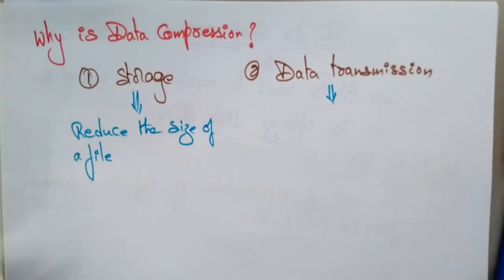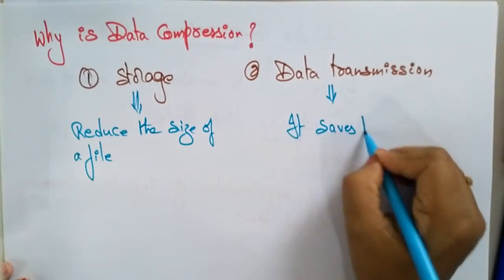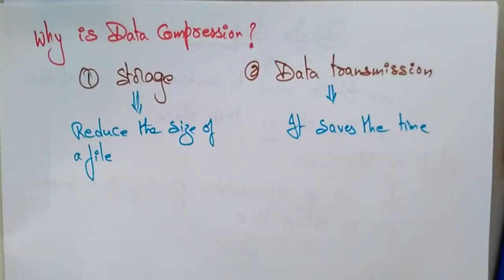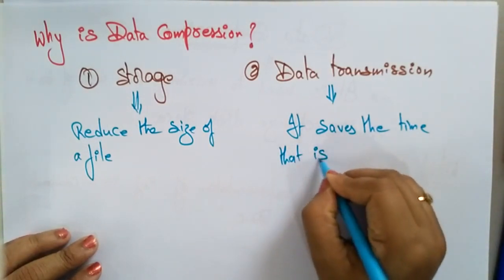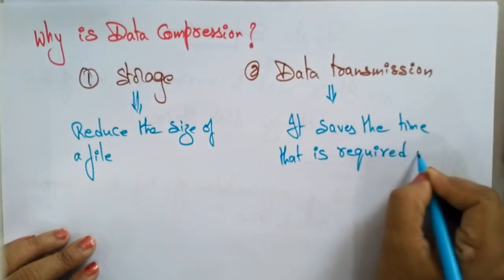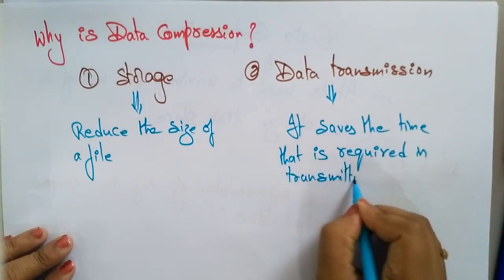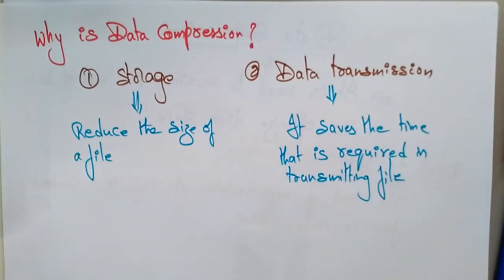For data transmission, data compression saves the time required in transmitting a file. So for these two reasons — storage and data transmission — we use data compression.